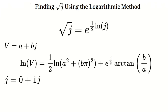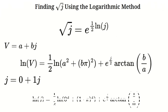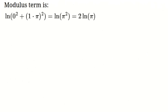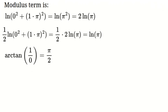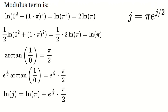For j, we have a = 0 and b = 1. Substituting these values, we get (1/2)·ln(0² + 1·π²) plus j/π times arctan(1/0). Simplifying, the modulus term gives us ln(π²), which simplifies to 2·ln(π). The phase term involves arctan(1/0); since 1/0 corresponds to an angle of π/2, we get j/π times π/2, which simplifies to j/2. So the logarithm of j simplifies to ln(π) + j/2.